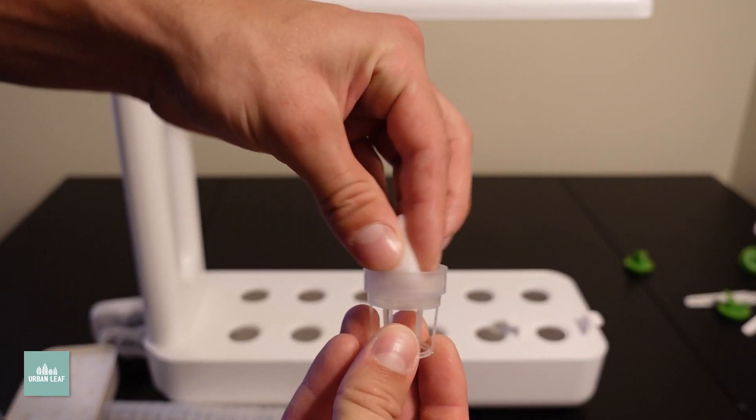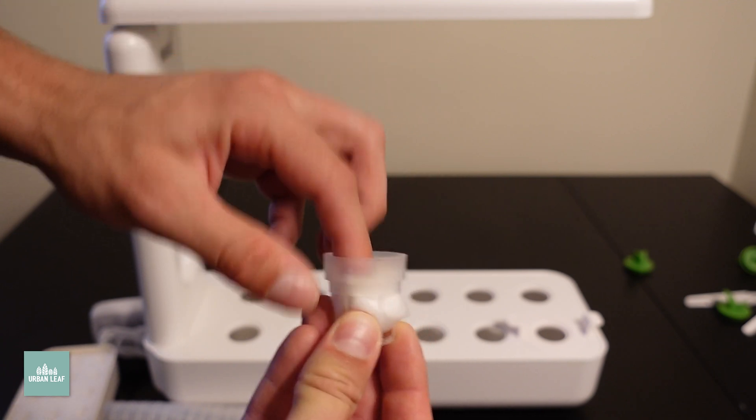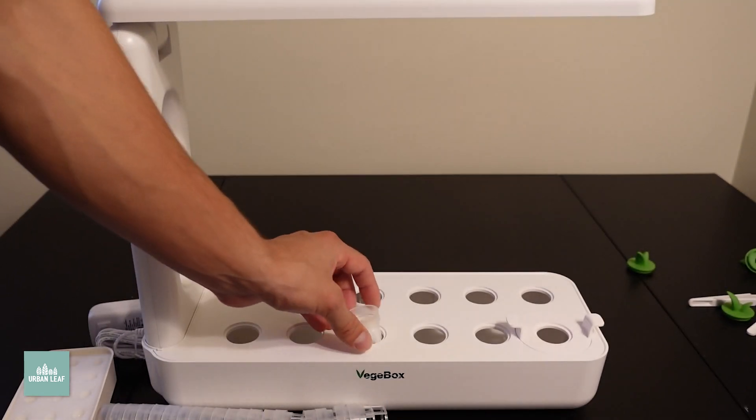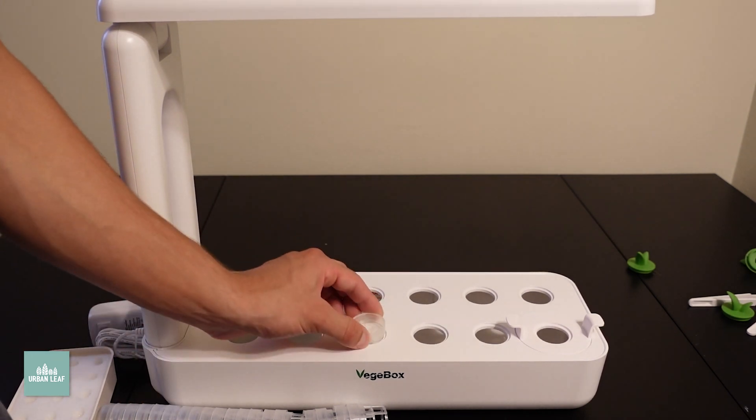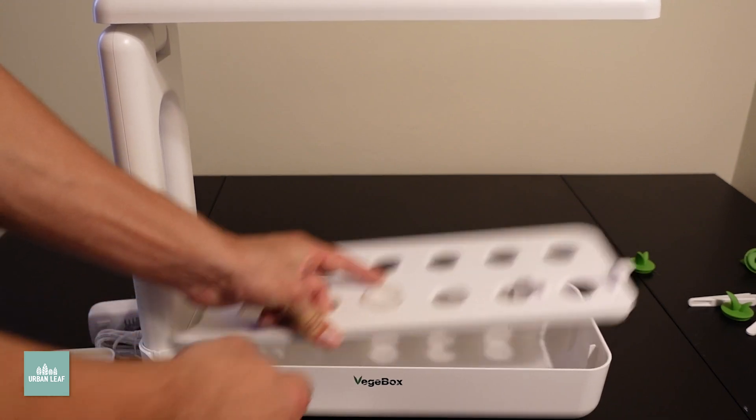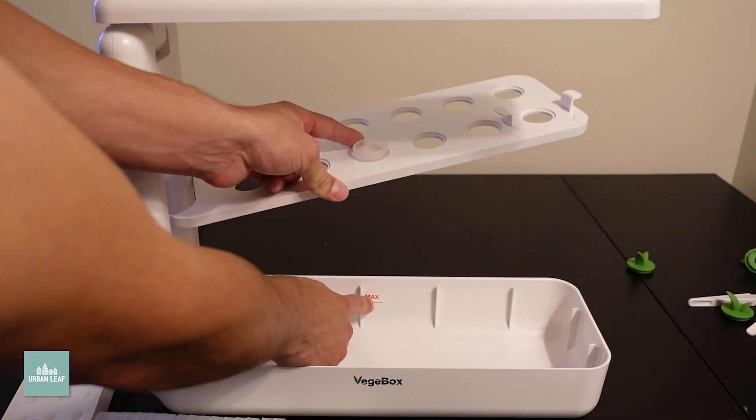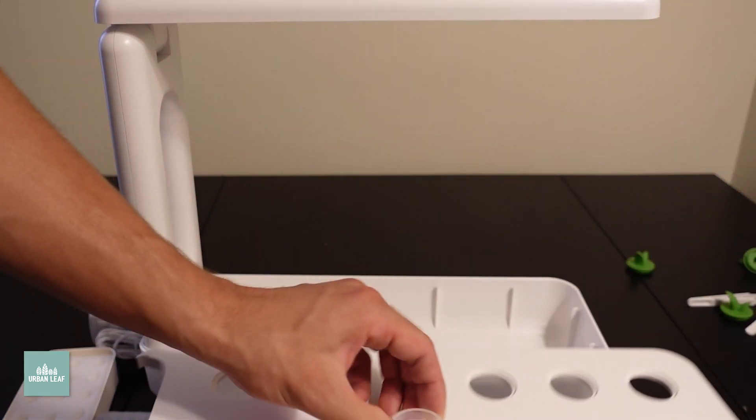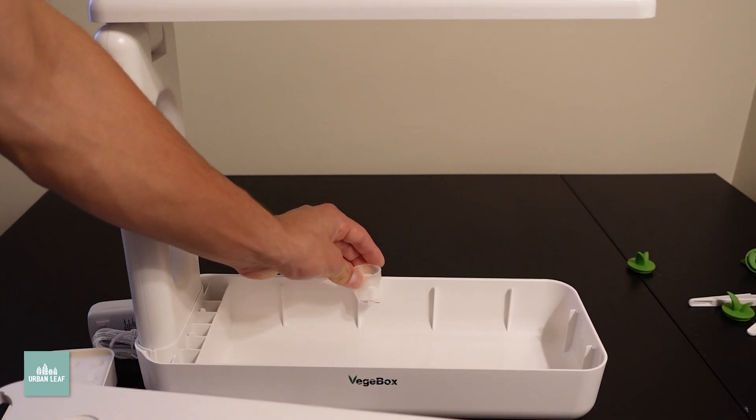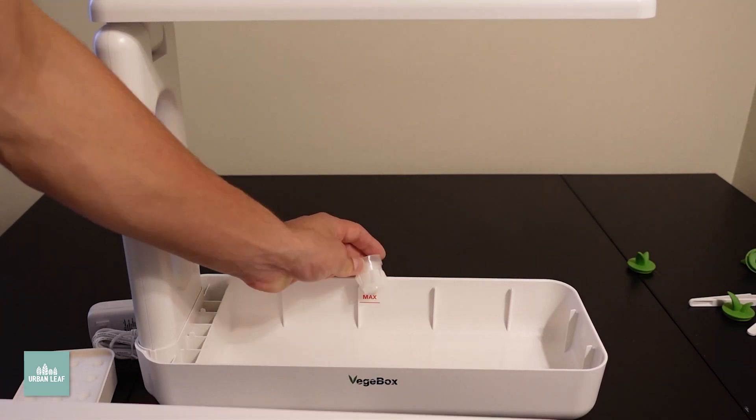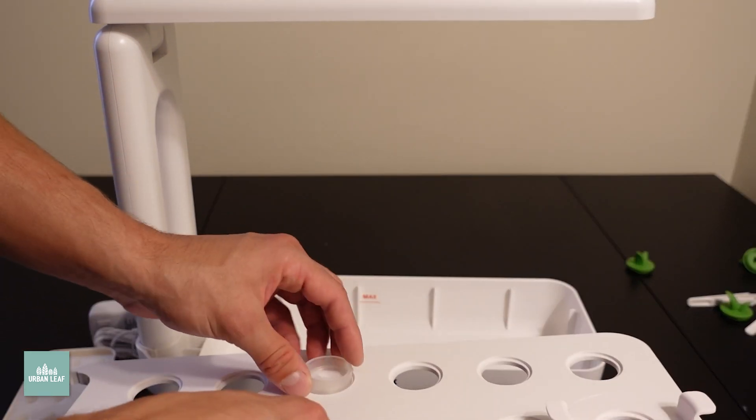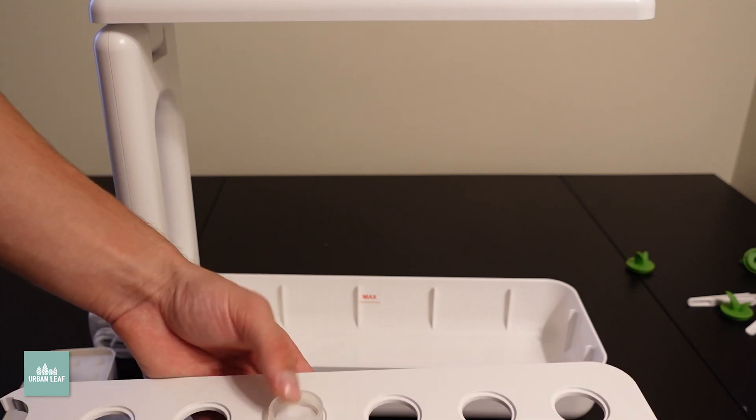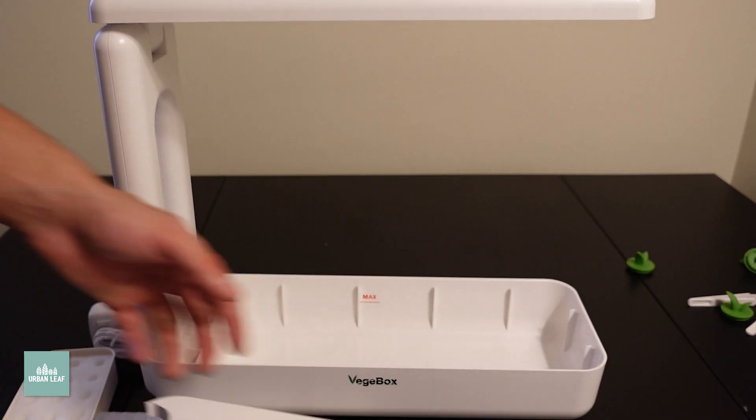Basically what is expected is that you'll be taking the foam grow cubes, just putting it in here, and plopping it in there. There's not a ton of room to submerge, so you will need to keep the water level relatively high. It says max right there. You're expecting the roots to be already below the max line. So you might actually want to fill it a tiny bit above the max fill level, unless you have a sizable plant before you actually even put it in this unit.